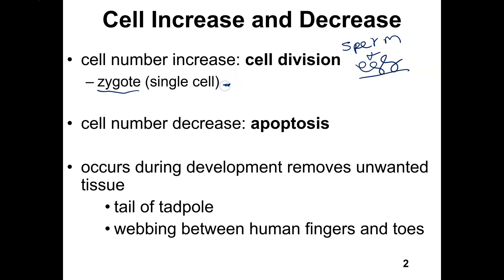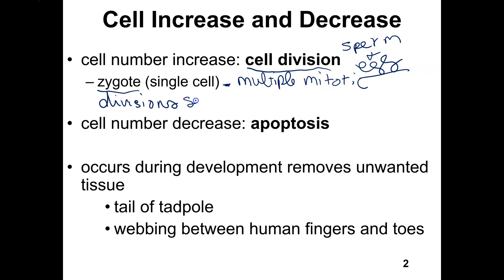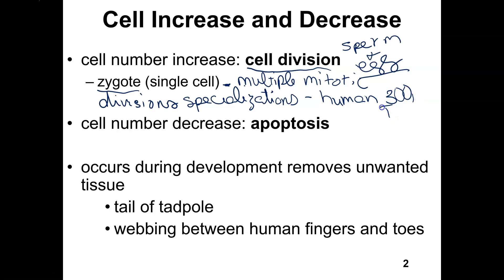This single cell is then going to go through multiple cell divisions and specializations. We produce a human that consists of 300 trillion cells, and that is only the human cells. We are also composed of a lot of bacteria — way more bacterial cells than human cells.